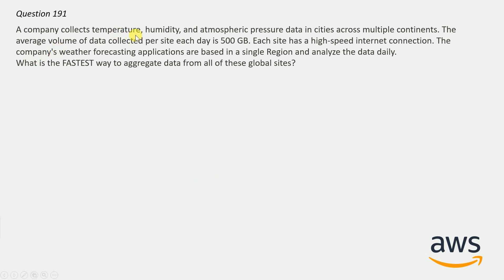A company collects temperature, humidity and atmospheric pressure data in cities across multiple continents. The average volume of data collected per site each day is 500 GB. Each site has a high speed internet connection. The company's weather forecasting applications are based in a single region and analyze the data daily. What is the fastest way to aggregate the data from all these global sites?